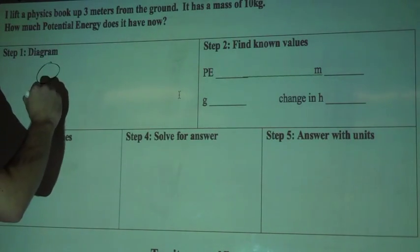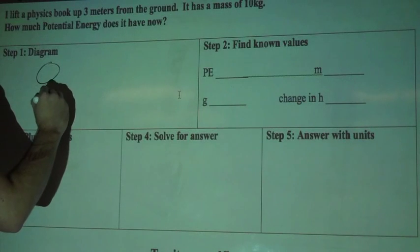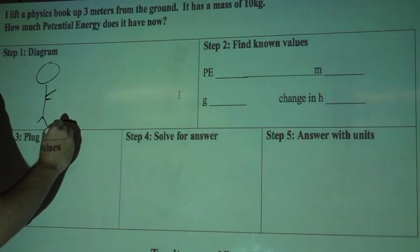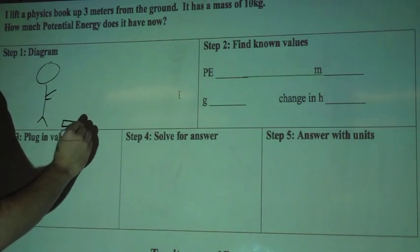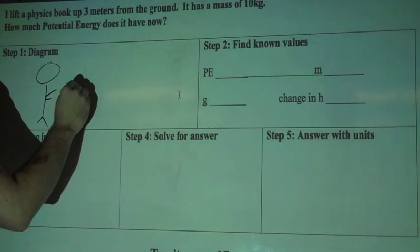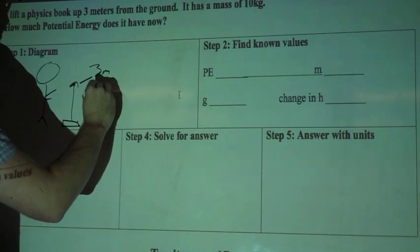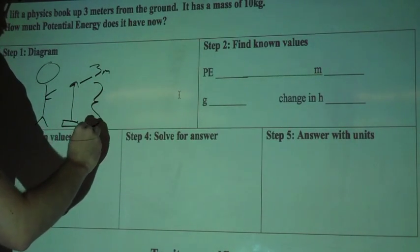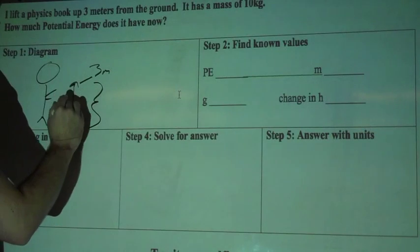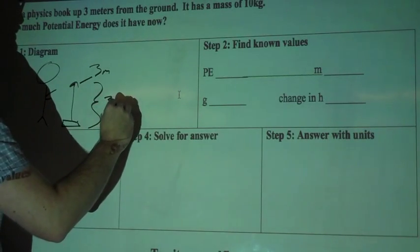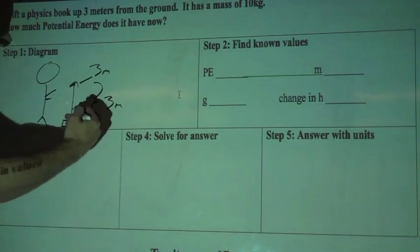Alright, so I draw my diagram. Here's me. The physics book starts from the ground, so I'll draw it starting there, and then I lift it up, so that's to 3 meters. The total height that it moves is from 0 to 3, so 3 meters is the change in height, and you'll see why that's important later on.